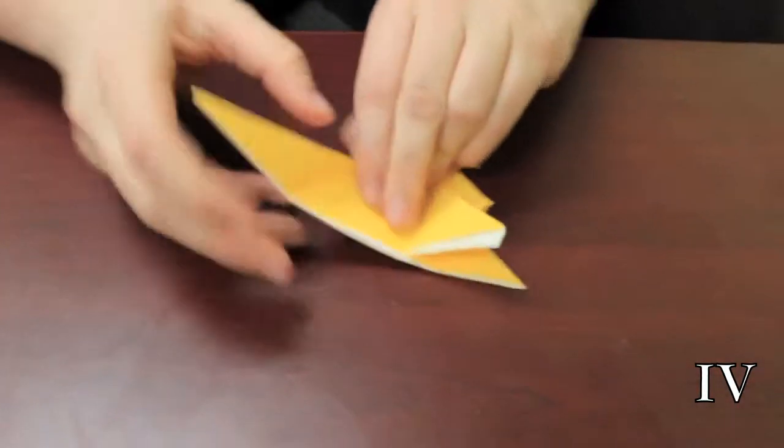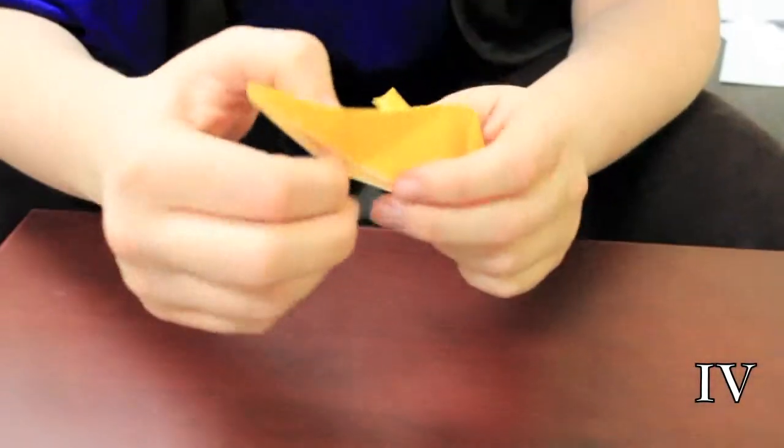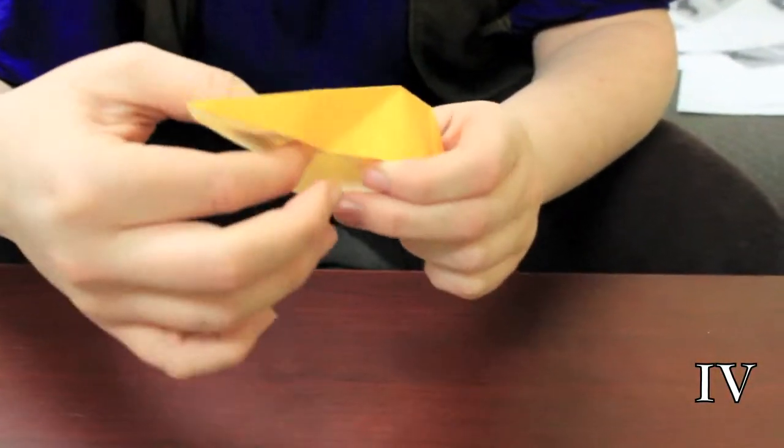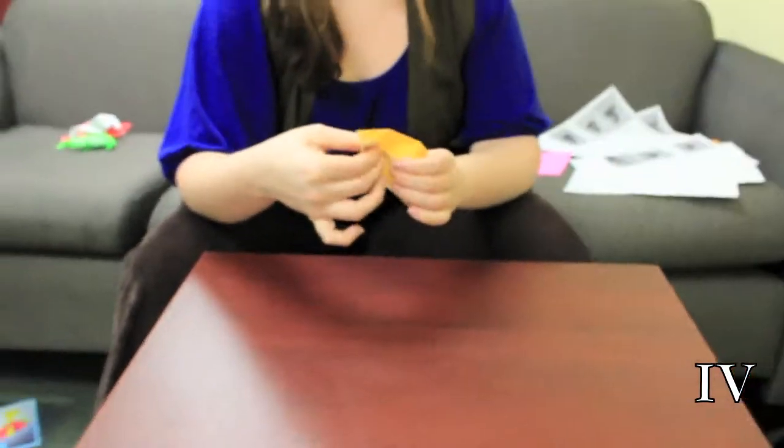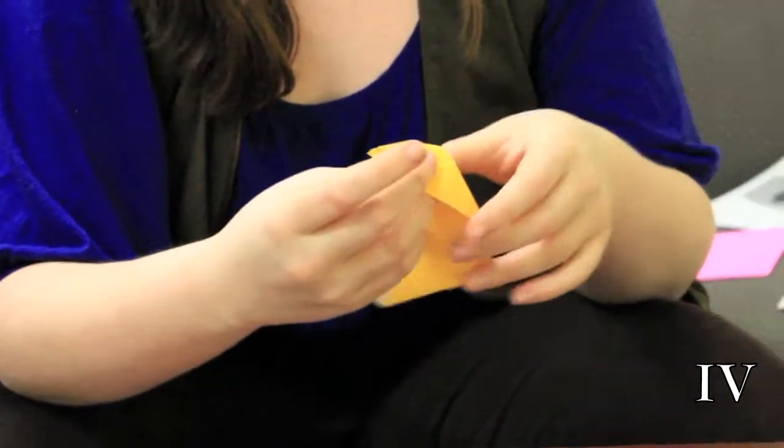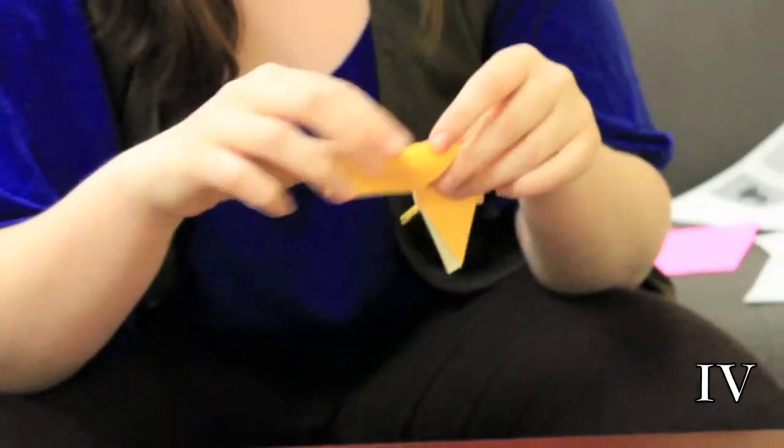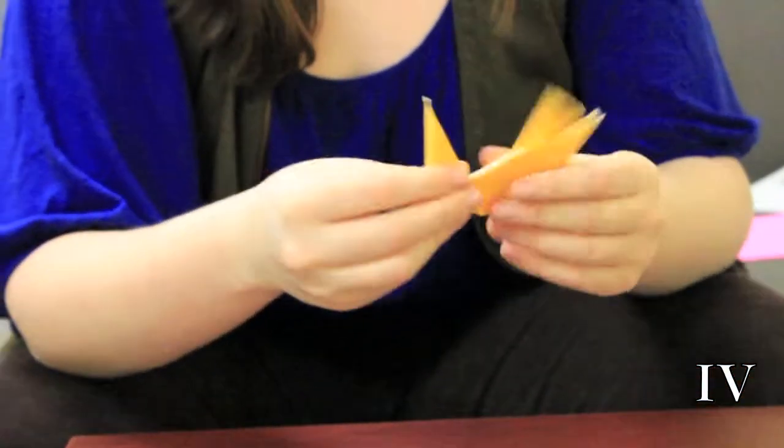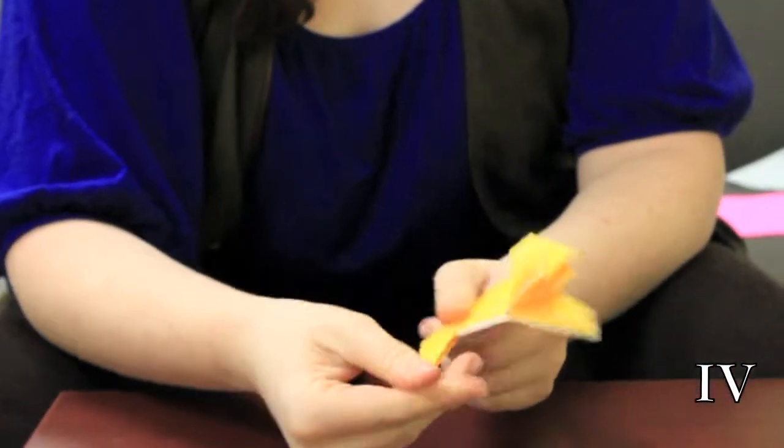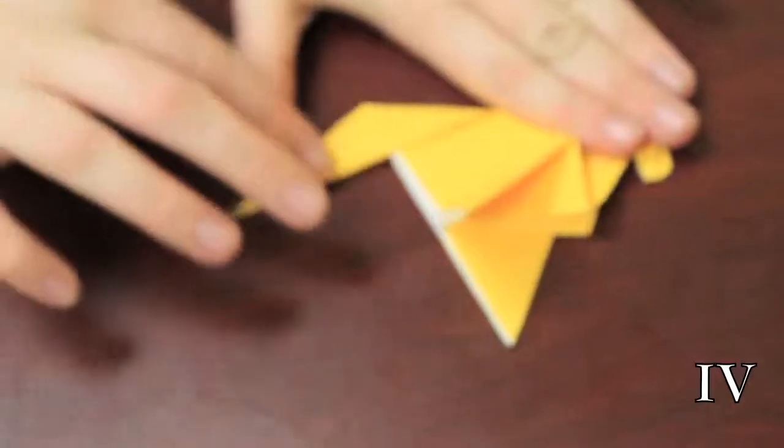Go back up and you fold along your fold here to create your horse's feet. So there's your horse's feet right there. Triangle.